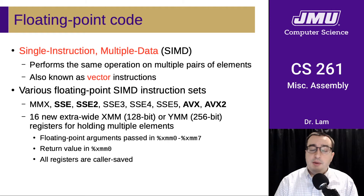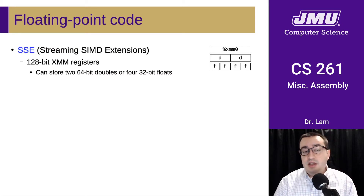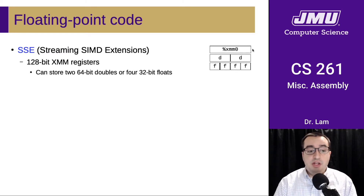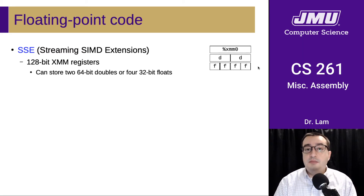There are rules for parameter passing: you can pass the first eight floating point arguments using XMM0 through XMM7. The return value is stored in XMM0, and all registers are caller saved. In SSE, these 128-bit registers called XMM registers — for example XMM0 — can store two 64-bit doubles side-by-side, or four 32-bit floats side-by-side. That's why these are vector instructions: one assembly instruction can operate on multiple pairs of data.